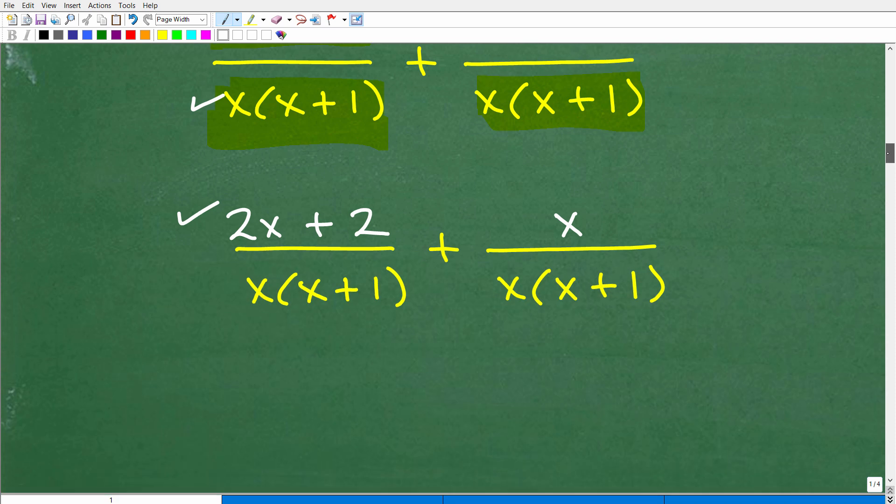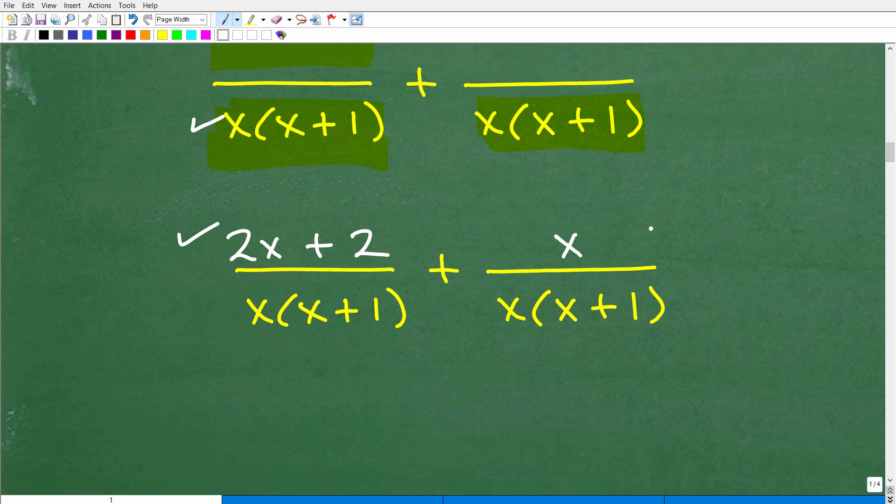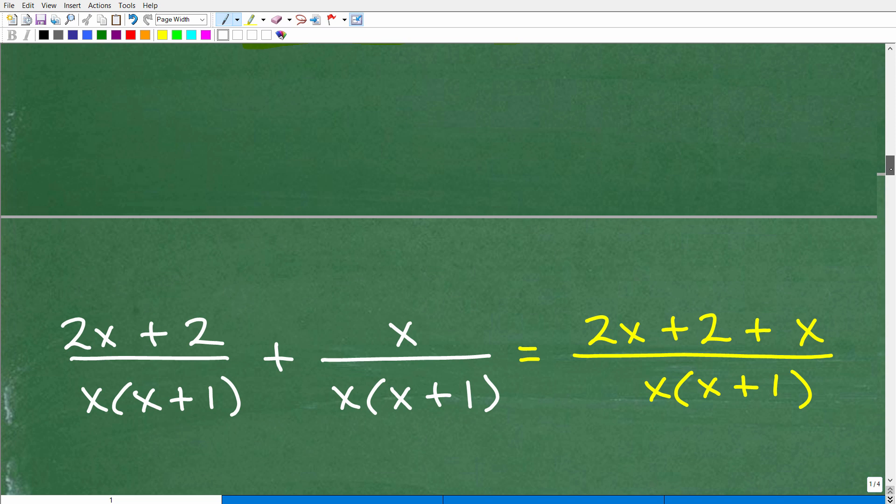All right, so we have 2x + 2 and x. So we are almost there, we finally have two rational expressions same denominators. So now we're ready to go ahead and just add the numerators. So just like in this situation, two-sevenths plus one-seventh, once the denominators are the same, well, we just simply add the numerators. So in this case would be 2 + 1 which would be three-sevenths. And that's the same thing we need to do here. So let's go ahead and finish this up.